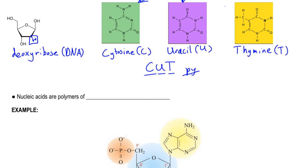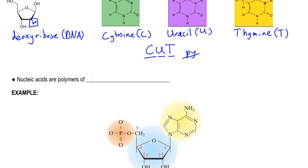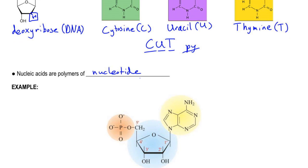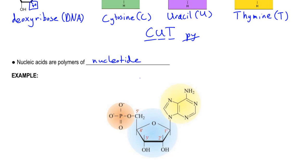Now, nucleic acids are polymers of nucleotides. A nucleotide is what you get when you put together all the pieces we just talked about. So, as you can see in our example, we have a nucleotide, this whole molecule, and it's made up of the phosphate group, the pentose, and the nitrogenous base.